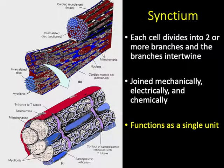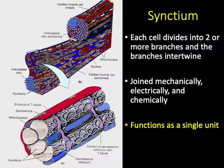Combining all those properties produces the phenomenon known as a syncytium — the ability of thousands of cells to work and function as a single unit. Cardiac cells are joined mechanically, electrically, and chemically in a unique way, resulting in a coordinated contraction of the entire heart, not just individual cells. This contraction moves essentially from the bottom toward the top in a twisting motion, emptying the ventricles as effectively as possible with each beat.